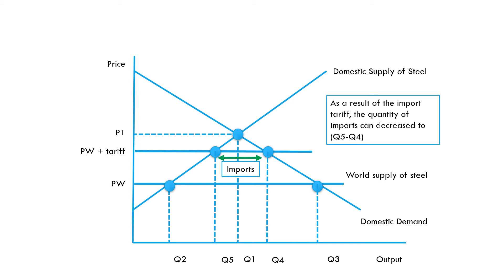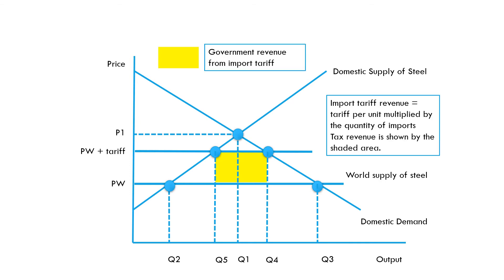What's been the impact in terms of welfare within our economy? First, the government generates significant tax revenue. The value of the tariff is the gap between the two supply curves, and it applies to all imported goods — the gap between Q4 and Q5. Multiplying the tariff by the volume of imports gives us the government revenue from the tariff.